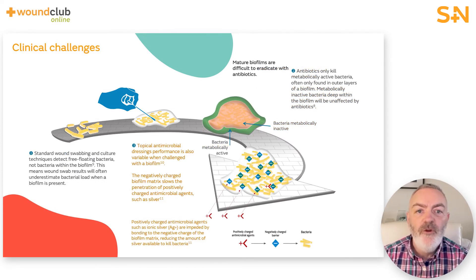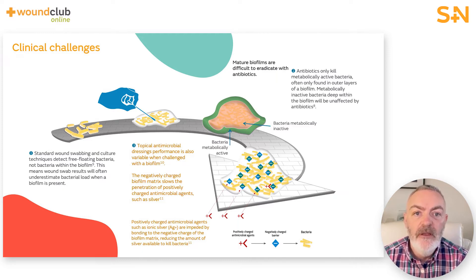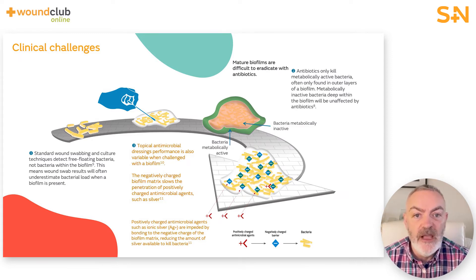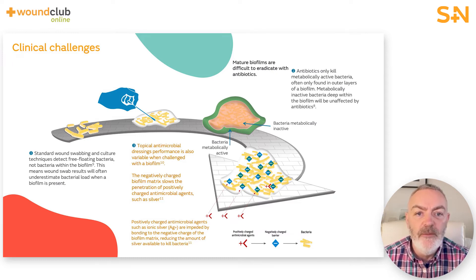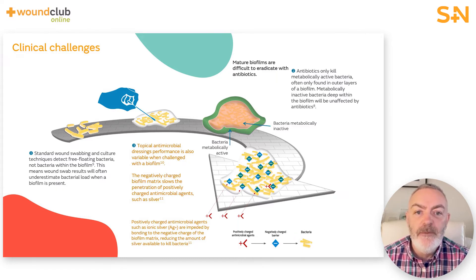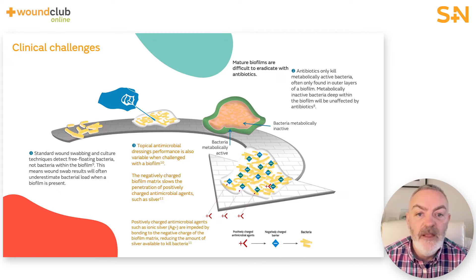When we try to treat these biofilms using positively charged antimicrobial agents such as ionic silver, these are trying to bond with the negatively charged bacteria within the matrix. Unfortunately, because the cells within the matrix are also metabolically inactive, they are not positively charged within the biofilm. Therefore, the amount of silver required to kill the bacteria is affected, and it will not have a significant effect on the communities within the biofilm.